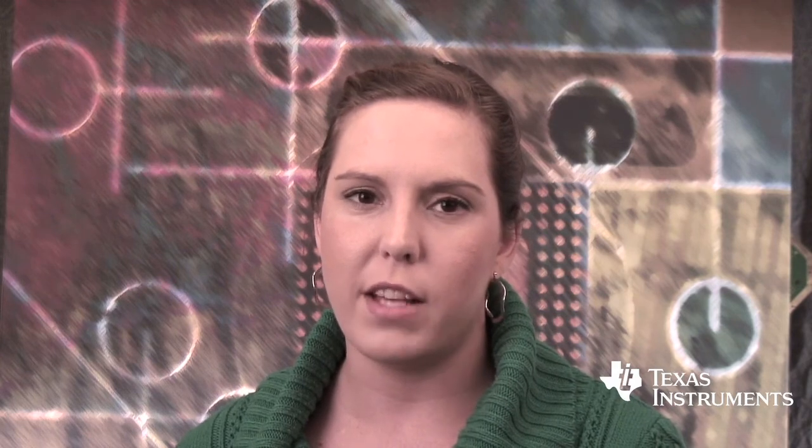However, by adding the high impedance input buffers, the instrumentation amplifiers no longer have the ability to handle high common mode input ranges outside of their supply rails like basic difference amplifiers are able to do. For high common mode input range applications, a difference amplifier or a variation such as a current shunt monitor is the best choice.